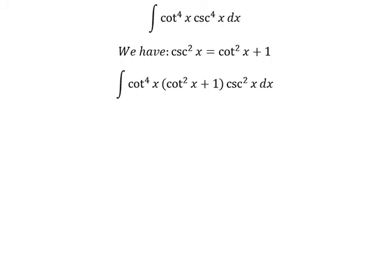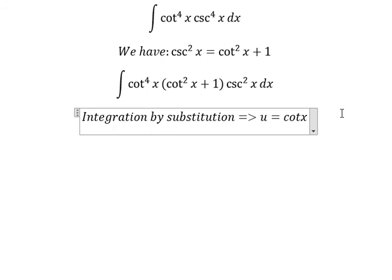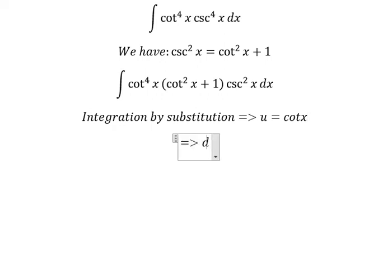Next, we can use integration by substitution. So we let u equal to cot(x), then du = -csc²(x) dx.